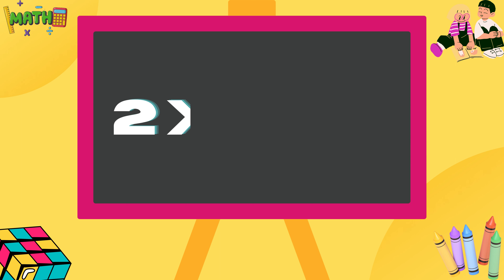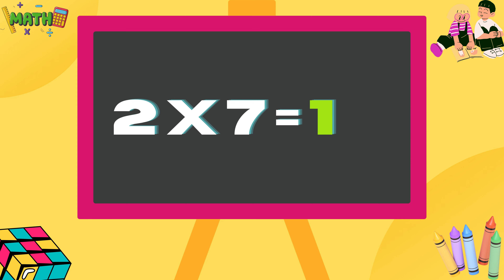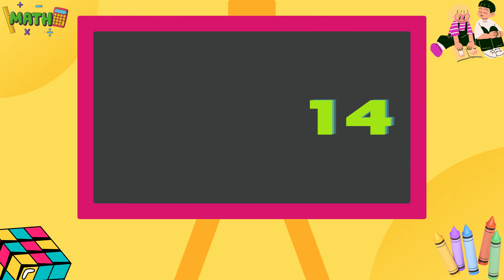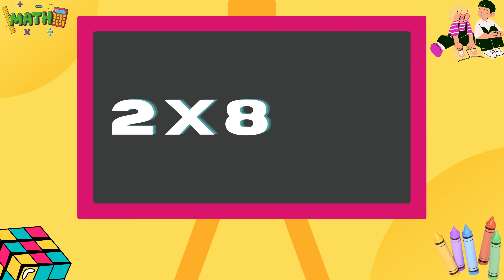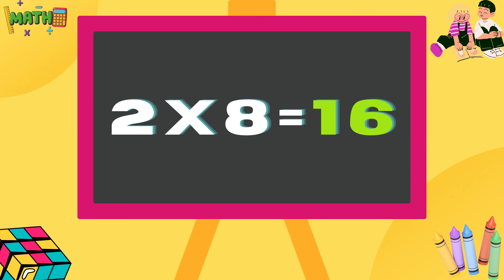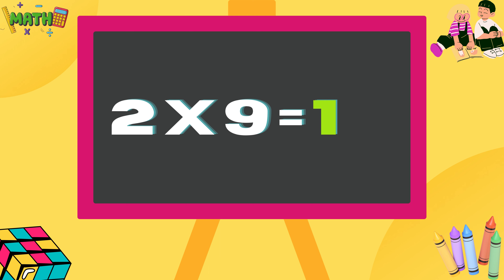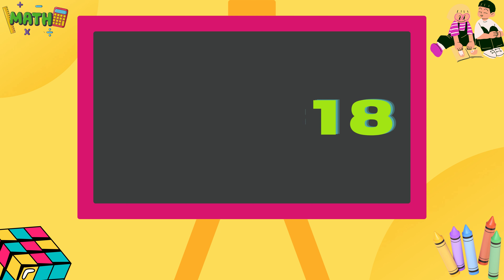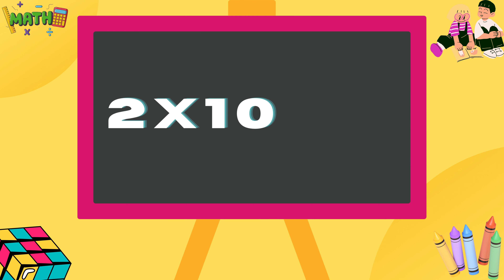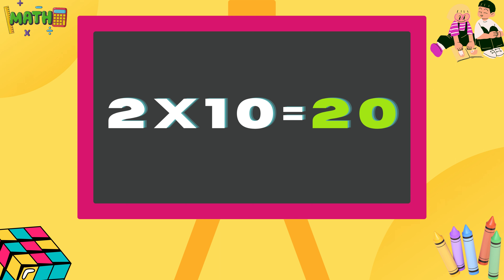Two sevens are fourteen. Two eights are sixteen. Two nines are eighteen. Two tens are twenty.